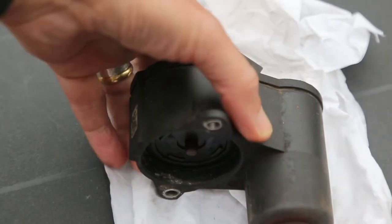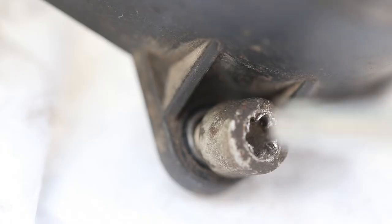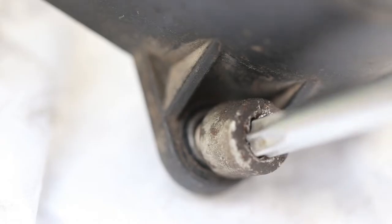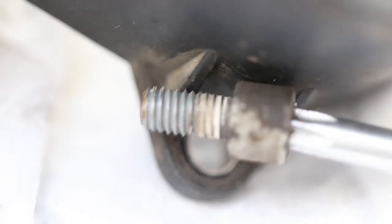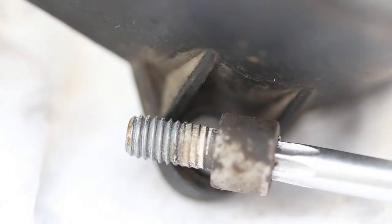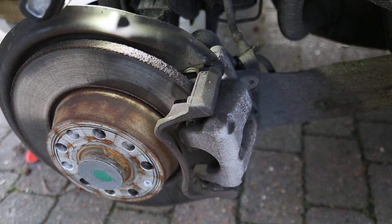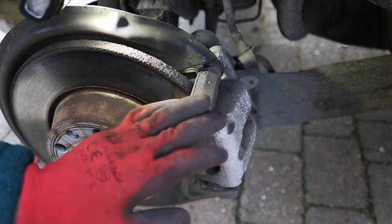So there are two Torx bolts that hold the motor onto the caliper. So you need to remove those and then remove the lead that goes to it and you'll then be able to remove the motor from the caliper.